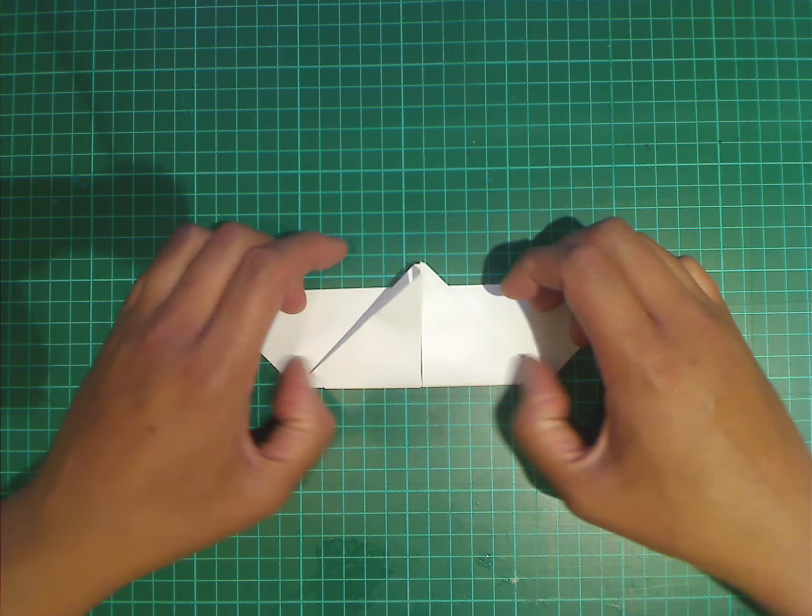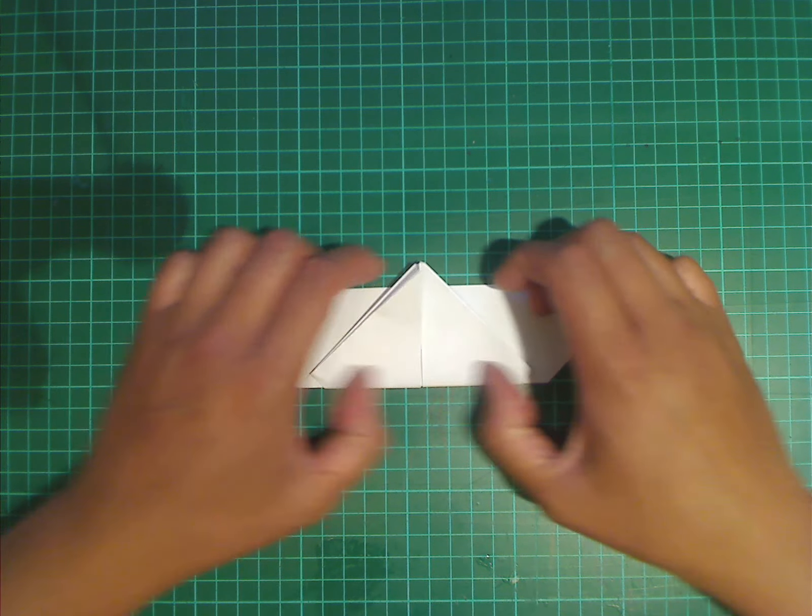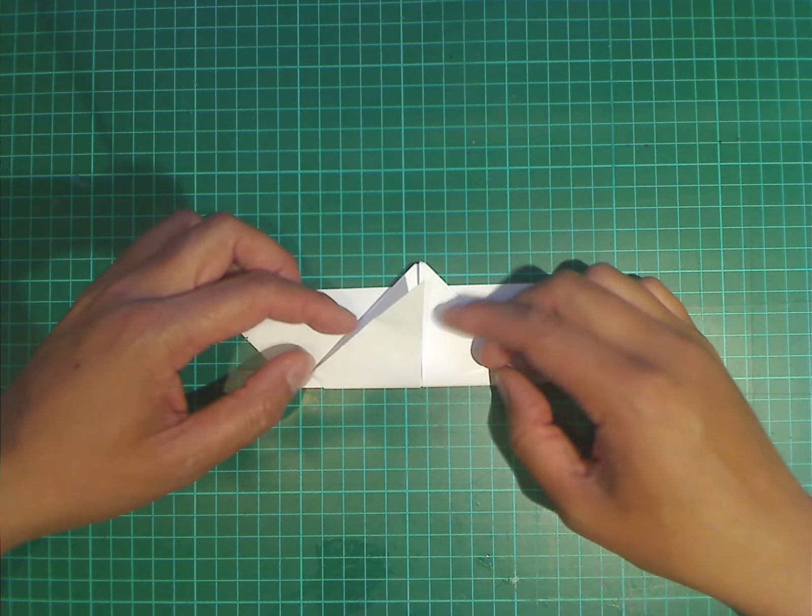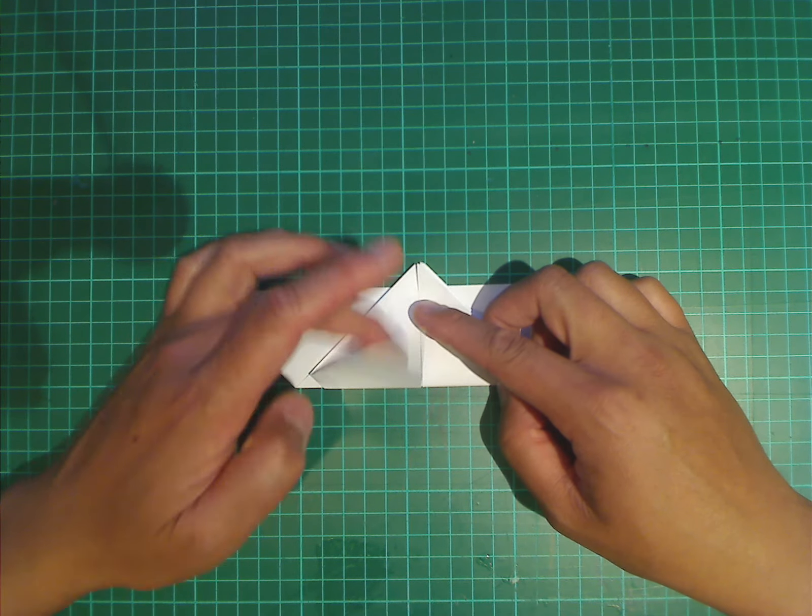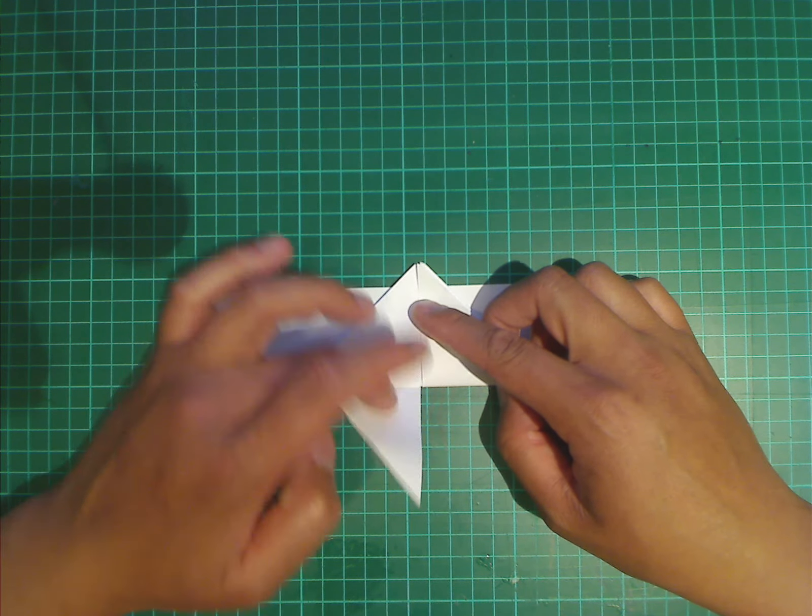And the paper is quite thick here. But you need to fold right through the model. Next, we're going to pull down this corner and bring it all the way down.